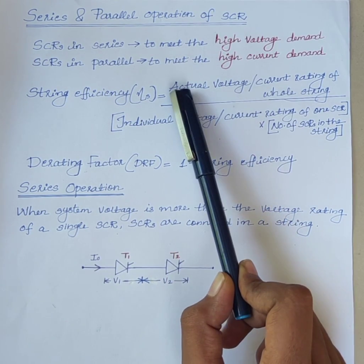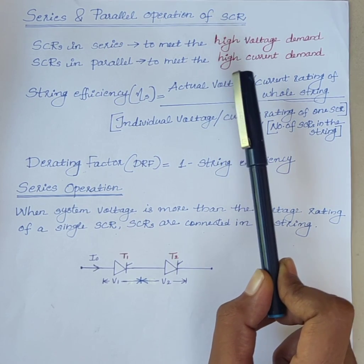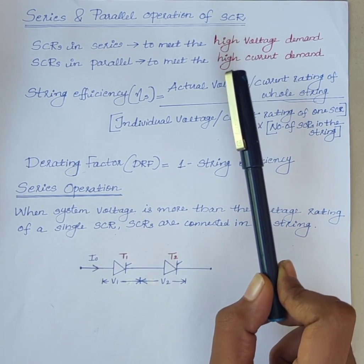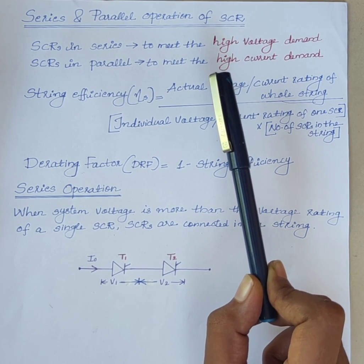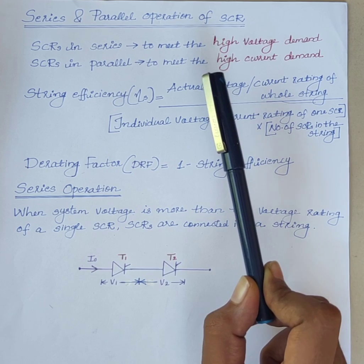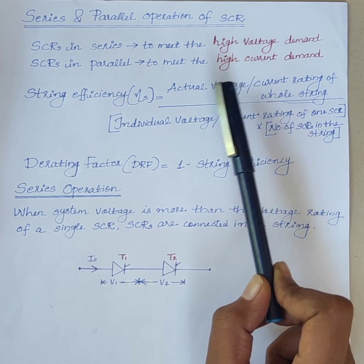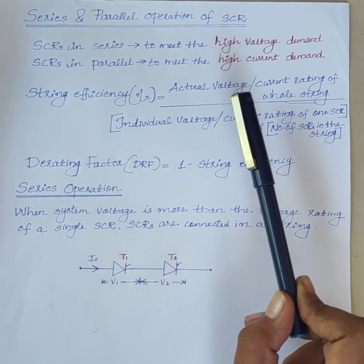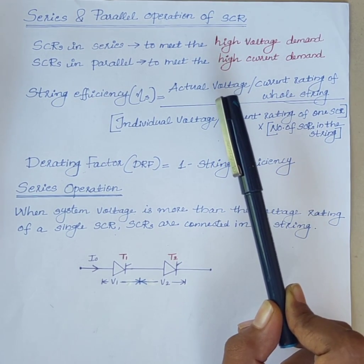SCRs are usually available at ratings up to 10 kV and 3 kA. But some industrial applications demand voltage and current ratings so high that a single SCR cannot fulfill such requirements.